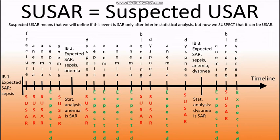Information about it will be published in the new version of the investigator brochure. But we are obliged to provide safety information to the regulatory authorities and local ethics committees in a timely manner, and we cannot wait until the release of the next investigator brochure. That is the moment when the term SUSAR comes to the scene. The first letter S stands for the word SUSPECTED — meaning that we suspect we are dealing with an unexpected serious adverse reaction. We are not sure, but we suspect. Hence, we must notify the regulator and local ethics committee.